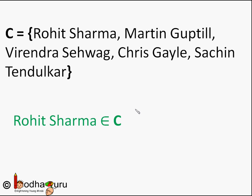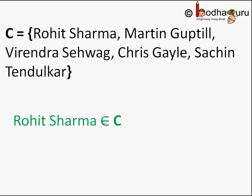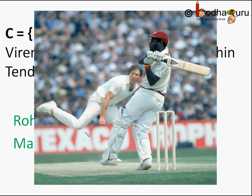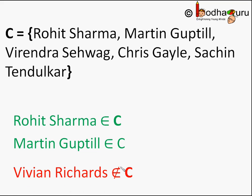We can also say Rohit Sharma belongs in set C. We write it in this form — 'Rohit Sharma belongs in set C' — that 'belongs' is represented by a symbol very similar to E. Same way, Martin Guptill also belongs in set C and so on. But Vivian Richards, another great cricketer of the 80s and one of my favourite cricketers, does not belong in set C. We represent 'does not belong' like a cut E. No doubt he was a great cricketer, but his highest was 189 against England in 1984, so he has not scored a double century in a one-day match.